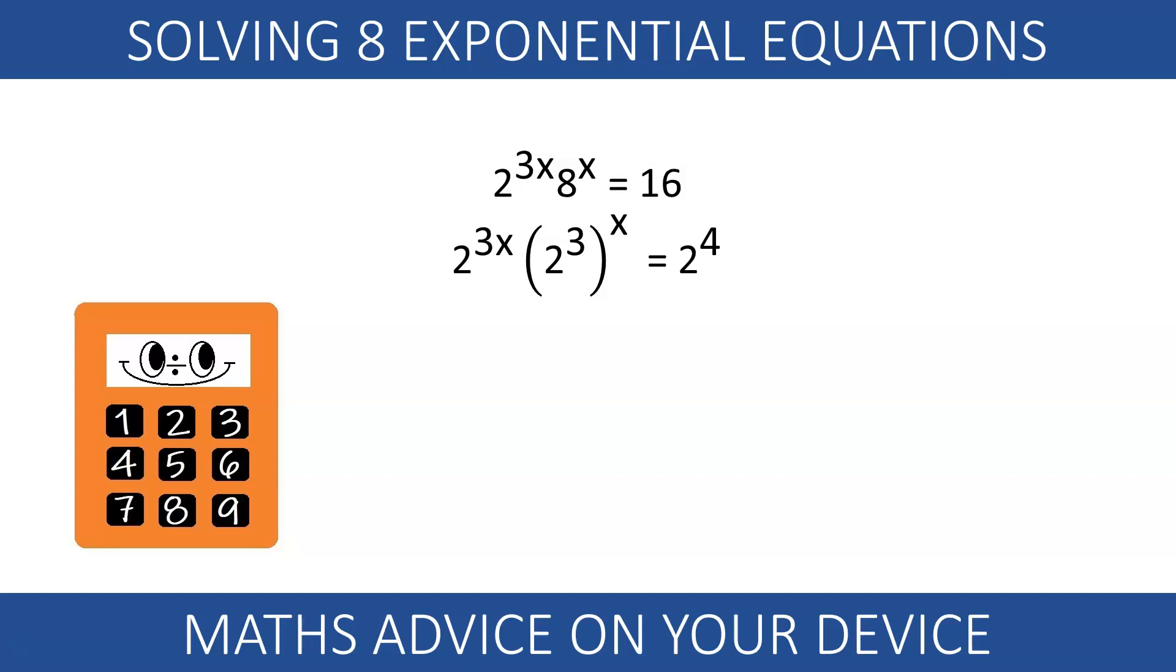This equation requires us to play with the properties of exponents. Remember, to multiply 2 powers with the same base, we add the exponents. 6x equals 4. So x must be 2 thirds.